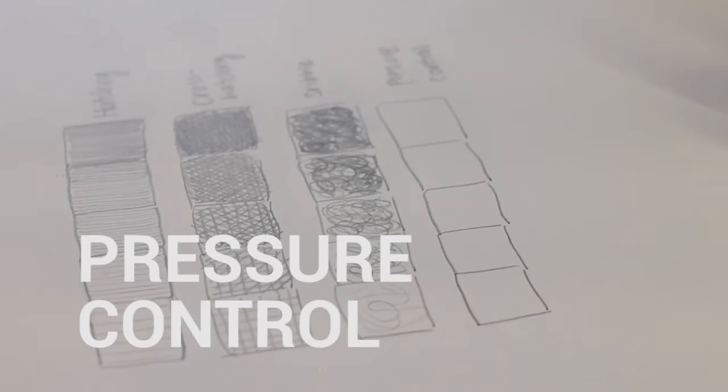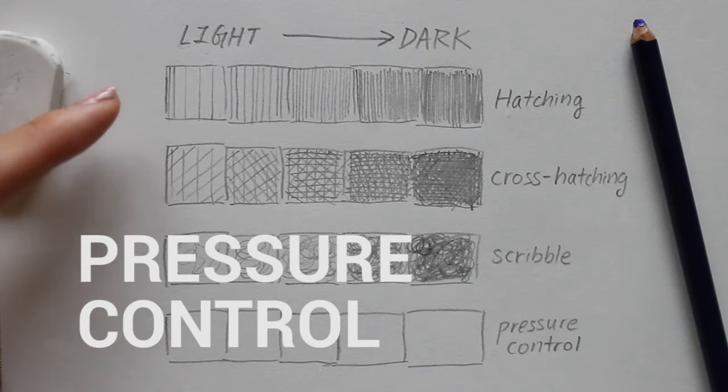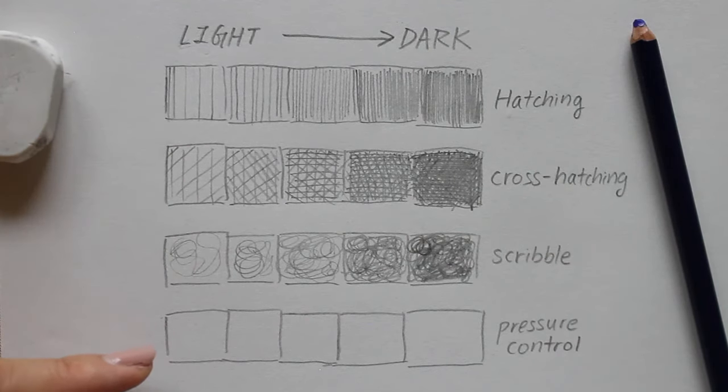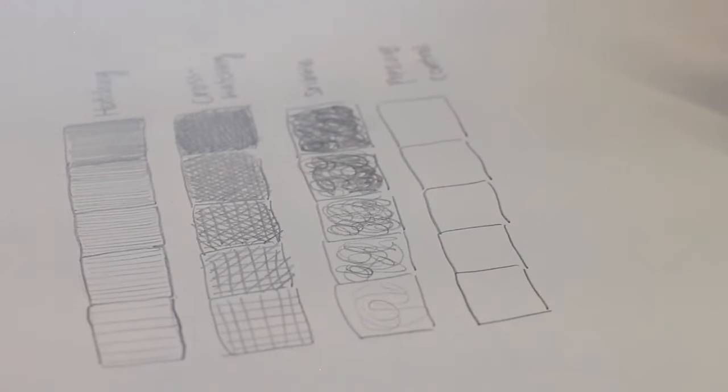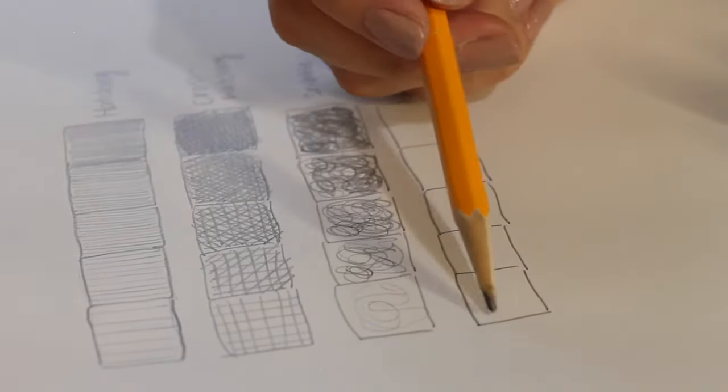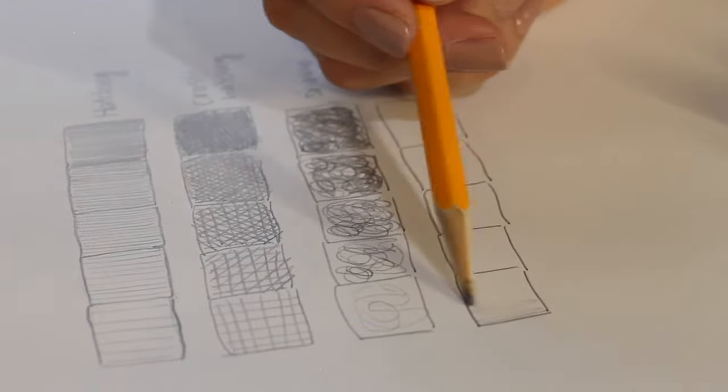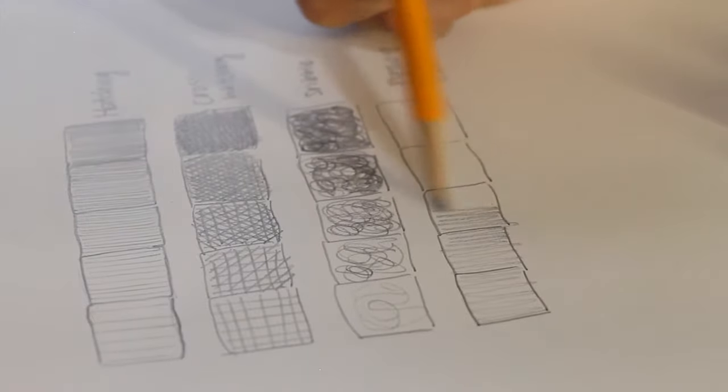Pressure control: This is a very important one. You might have already done this during the previous exercises. For this, I'm going to shade these five boxes without lifting my pencil up, starting by pressing very, very softly at the beginning and then a little bit harder as I move toward the right side.